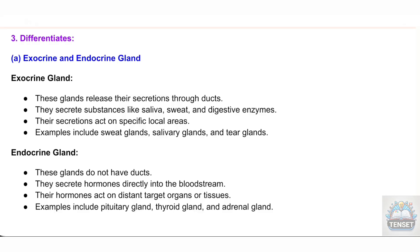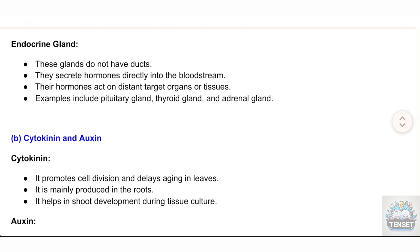Endocrine gland: These glands do not have ducts. They secrete hormones directly into the bloodstream. Their hormones act on distant target organs or tissues. Examples include pituitary gland, thyroid gland, and adrenal gland.